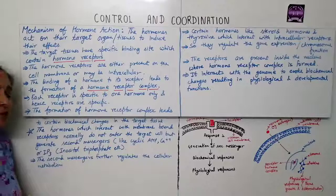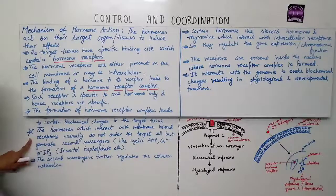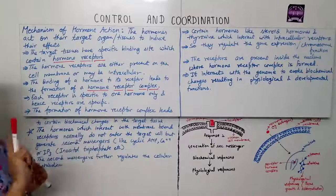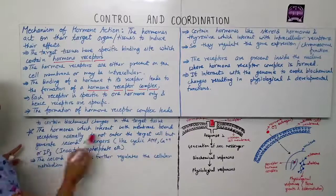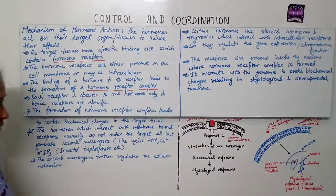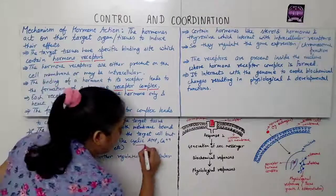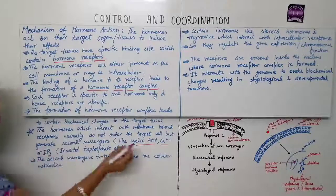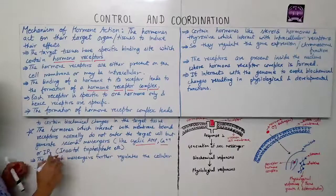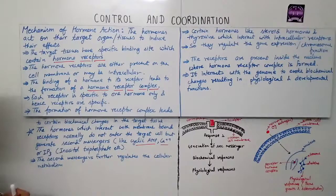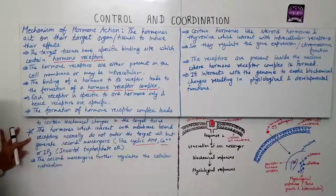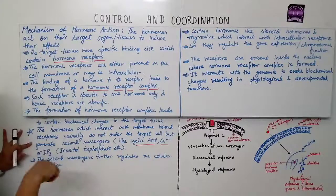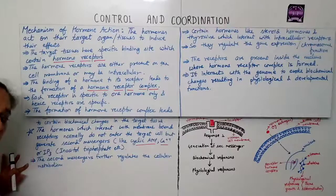The formation of the hormone-receptor complex leads to certain biochemical changes in the target tissues. Hormones which interact with membrane-bound receptors normally do not enter the target cell, but generate secondary messengers such as cyclic AMP, calcium ions, or IP3 (inositol triphosphate). These secondary messengers further regulate cellular metabolism.